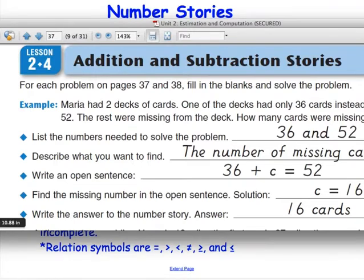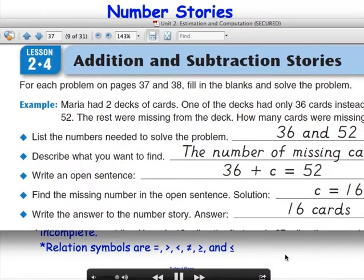Lastly, write the answer to the number story. What answers the question, how many cards were missing? 16 cards. You'll notice your answer is going to need a unit. You're always going to have a unit when you're working with story problems, and so your answer should involve the solution, 16, along with the unit cards: 16 cards.